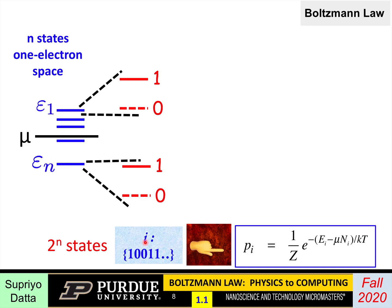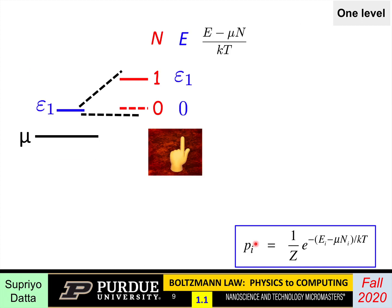The Boltzmann law is stated in this state space. It says that the probability the system will be in the i-th state depends on e to the power of a quantity involving the energy of the i-th state, the number of electrons in the i-th state, the electrochemical potential mu, and the thermal energy kT — the same kT as in the Fermi function. The constant in front is chosen so that all probabilities add up to one. I'll show you next how from this general law you can obtain the Fermi function.